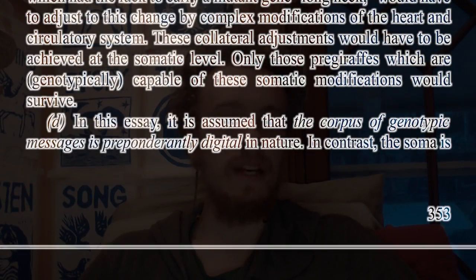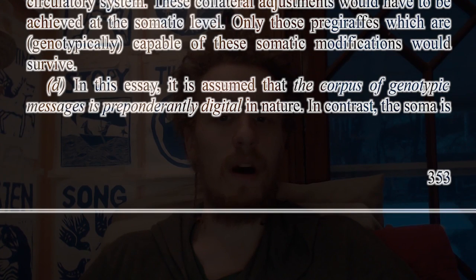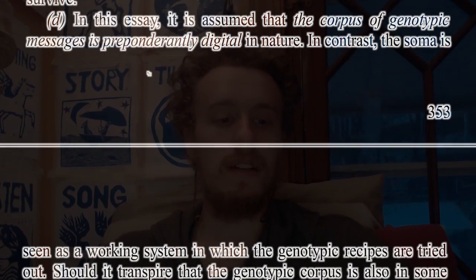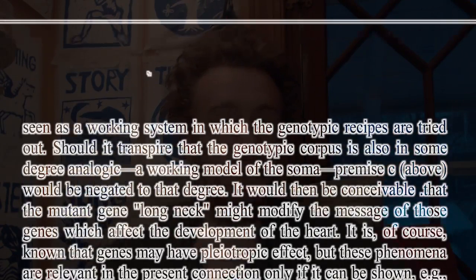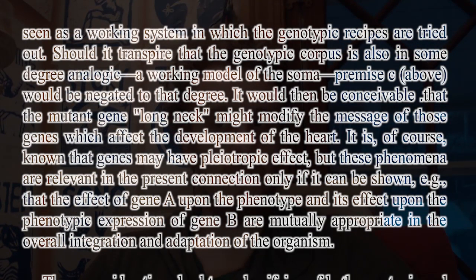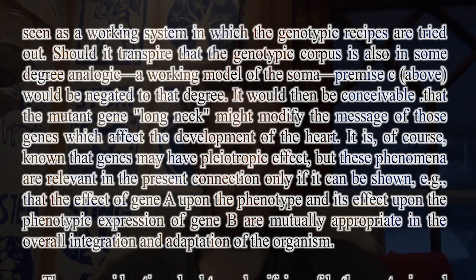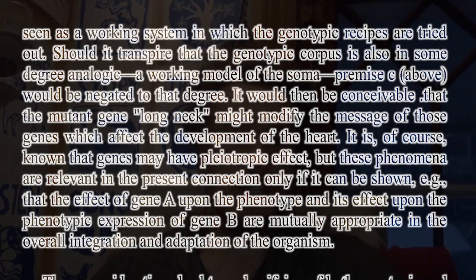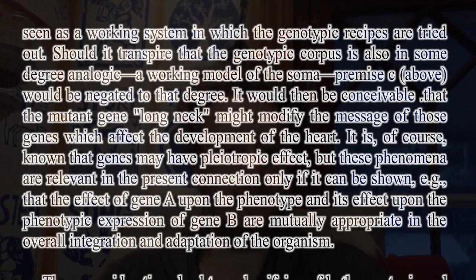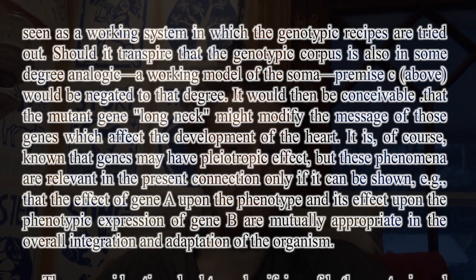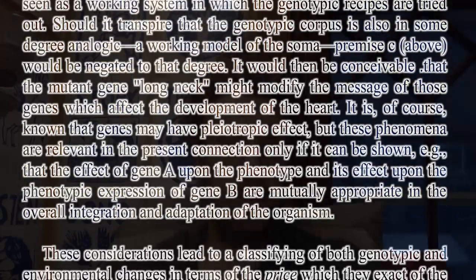D. In this essay, it is assumed that the corpus of genotypic messages is preponderantly digital in nature. In contrast, the soma is seen as a working system in which genotypic recipes are tried out. Should it transpire that the genotypic corpus is also in some degree analogic — a working model of the soma — premise C above would be negated to that degree. It would then be conceivable that the mutant gene long neck might modify the message of those genes which affect the development of the heart. It is, of course, known that genes have pleiotropic effect, but these phenomena are relevant in the present connection only if it can be shown that the effect of gene A upon the phenotype and its effect upon phenotypic expression of gene B are mutually appropriate in the overall integration and adaptation of the organism.